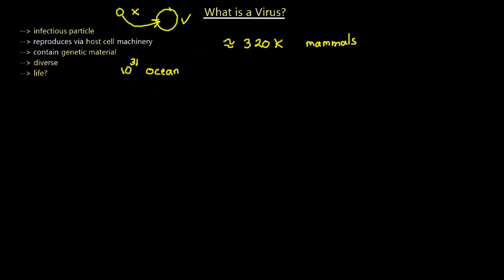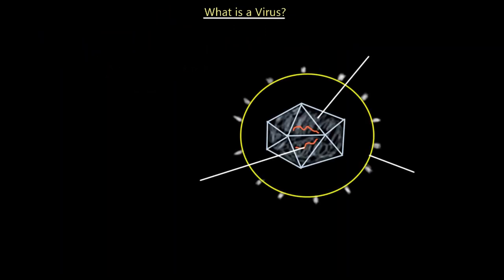We're going to look at some common structures and their key features, and also the basic mechanism of function once they infect a host cell. All viruses have a capsid structure and must have genetic material. The triangular structure shown here, surrounding the genetic material, is called the capsid.